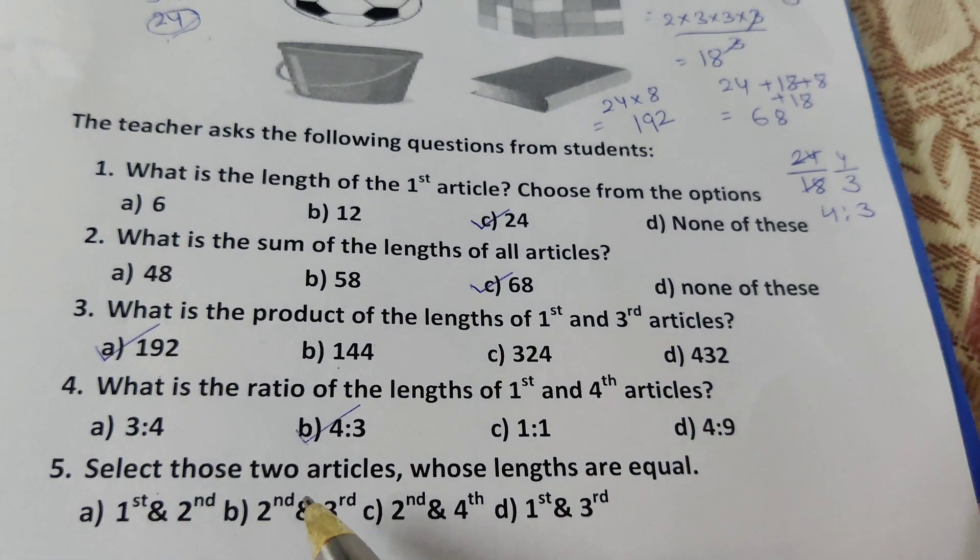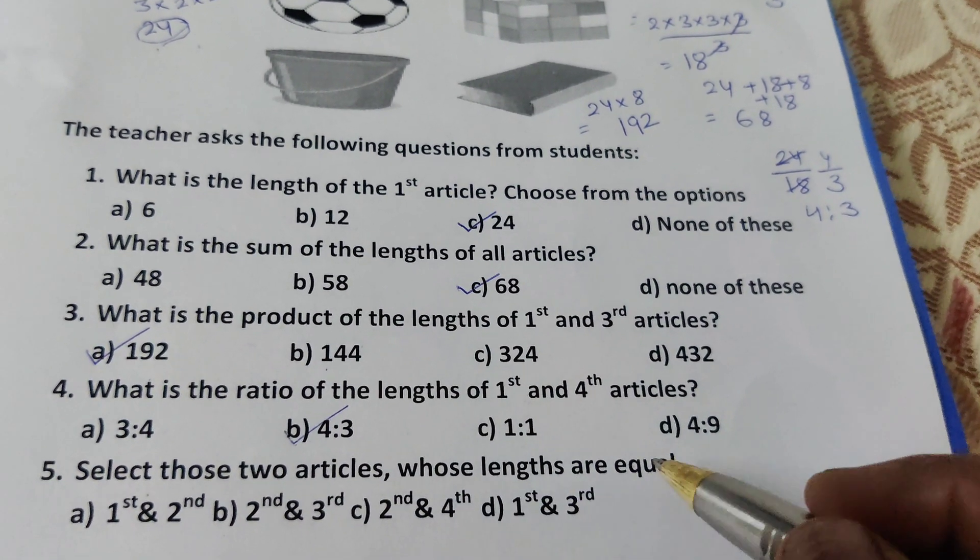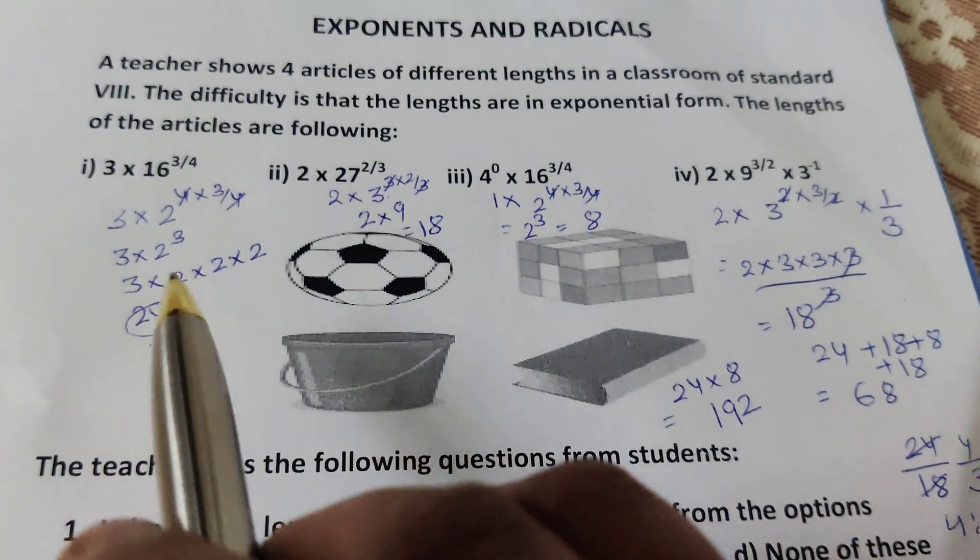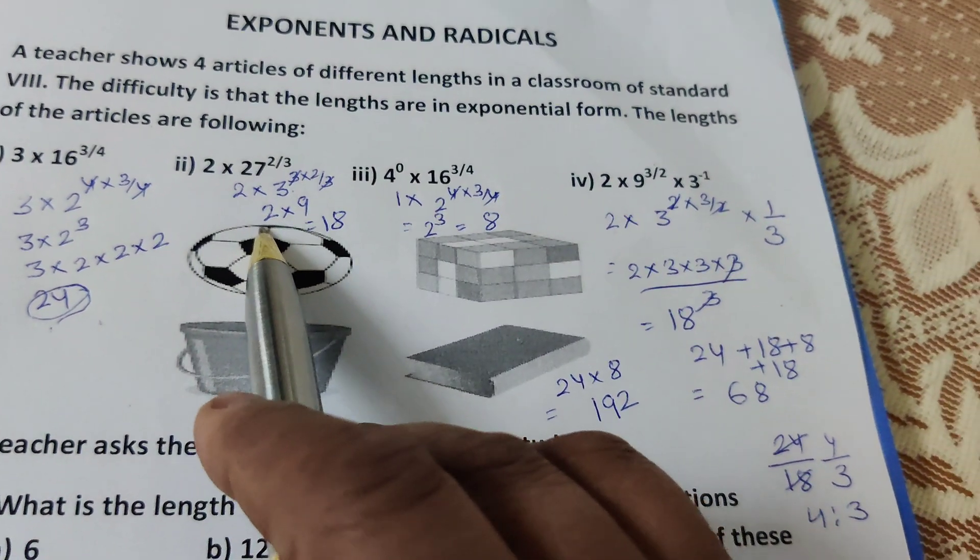And the last, select those two articles whose lengths are equal. The lengths are equal: 18 and 18. Second article and fourth.